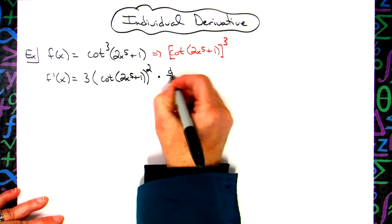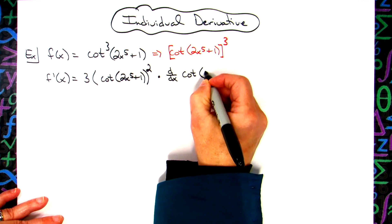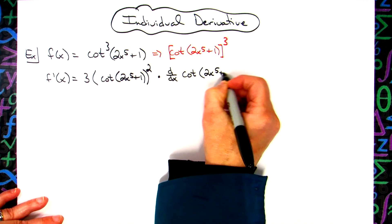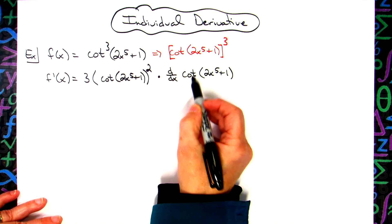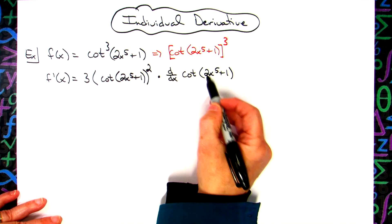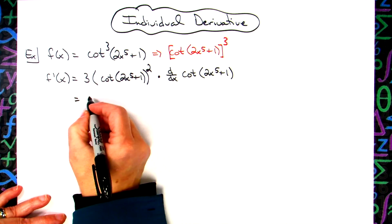So then we're going to take the derivative of that inside function, which is going to be the cotangent 2x to the fifth plus one. Now at this point, this is another chain rule, because our outside function is cotangent. Our inside function is 2x to the fifth plus one. So everything here is going to stay the same.